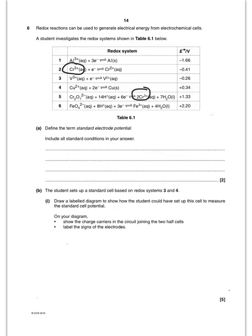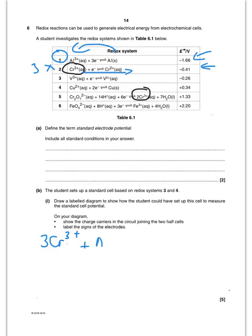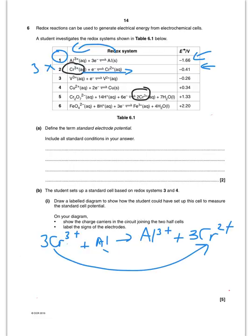Looking at redox system one, it is more negative than system two. I want chromium to be reduced, so aluminium will be oxidised. I need to multiply equation two by three to balance it, giving the overall equation: 3Cr³⁺ + Al → Al³⁺ + 3Cr²⁺. Here chromium is being reduced and aluminium is being oxidised.